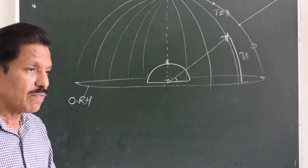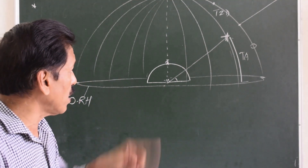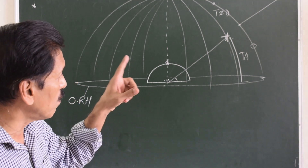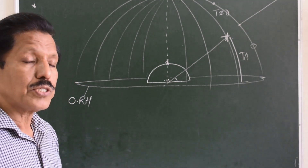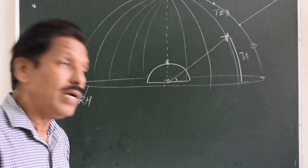So far, what I have defined is celestial sphere, observer's zenith, observer's rational horizon, observer's vertical circle, true altitude, and true zenith distance. I do want to be careful, and there is more to define.